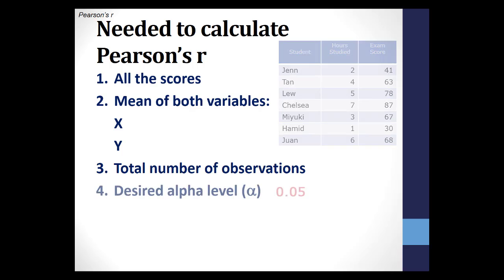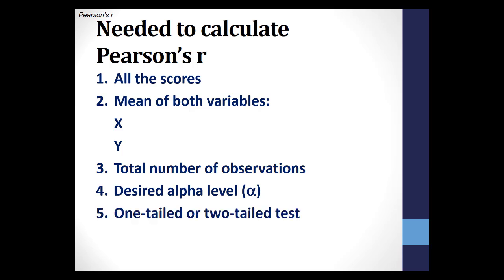You will need to establish your alpha level, which is usually 0.05, and you'll need to determine if your hypothesis necessitates a one-tailed or a two-tailed test. You'll recall that a one-tailed test is when we hypothesize that the difference between the two scores is directional, and a two-tailed test is when we are merely testing to see if there is a difference, or in this case, a correlation, without specifying which direction the correlation will be. It is non-directional.